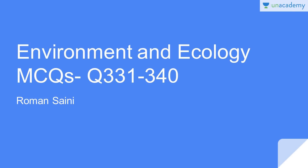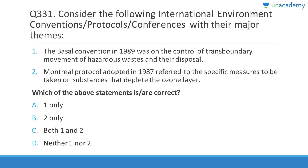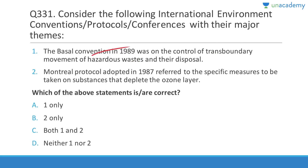We have covered one third of the course — 330 MCQs. Question 331: The Basel Convention (1989) was on the control of trans-boundary movement of hazardous wastes and their disposal — correct. The Montreal Protocol (1987), adopted under the Vienna Convention, refers to specific measures on substances that deplete the ozone layer — also correct. Answer is C (both 1 and 2).